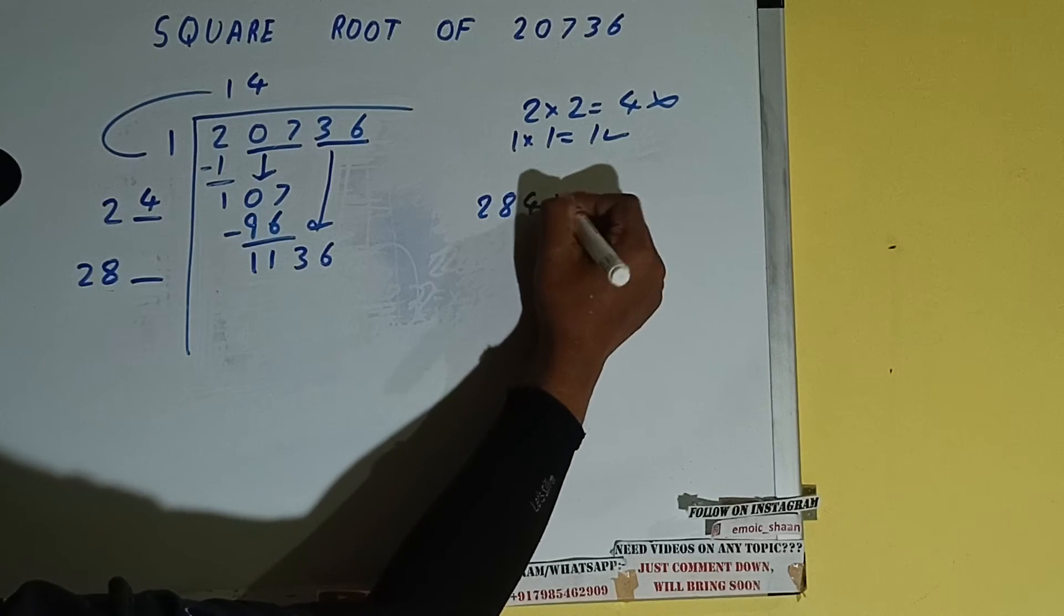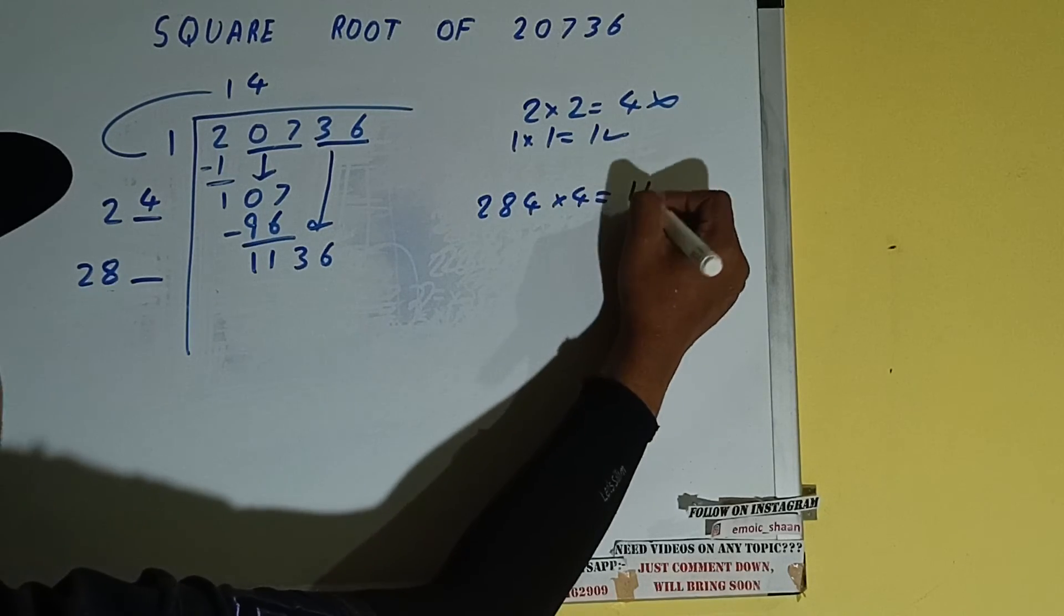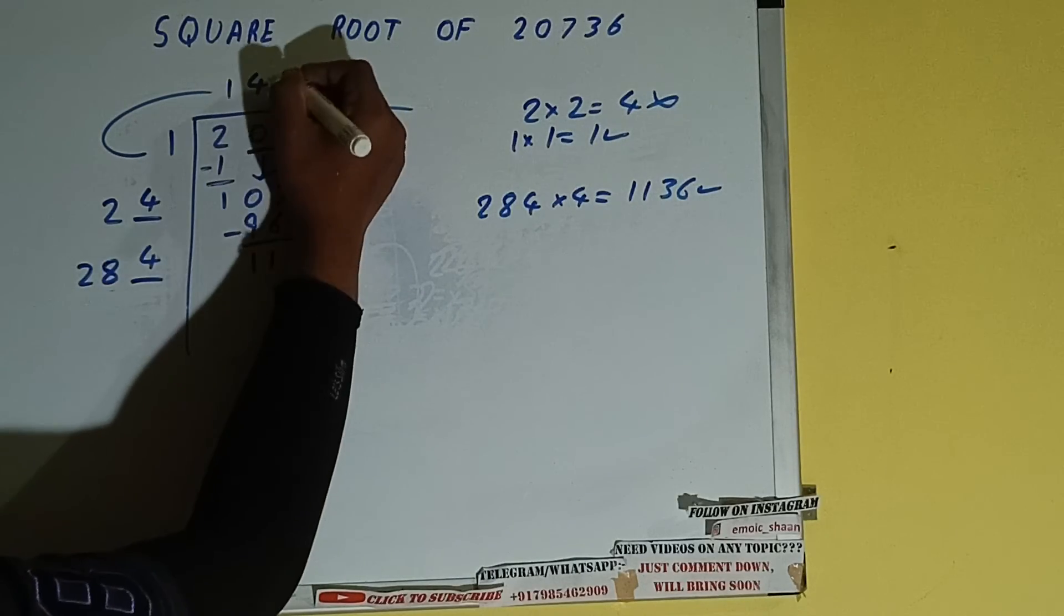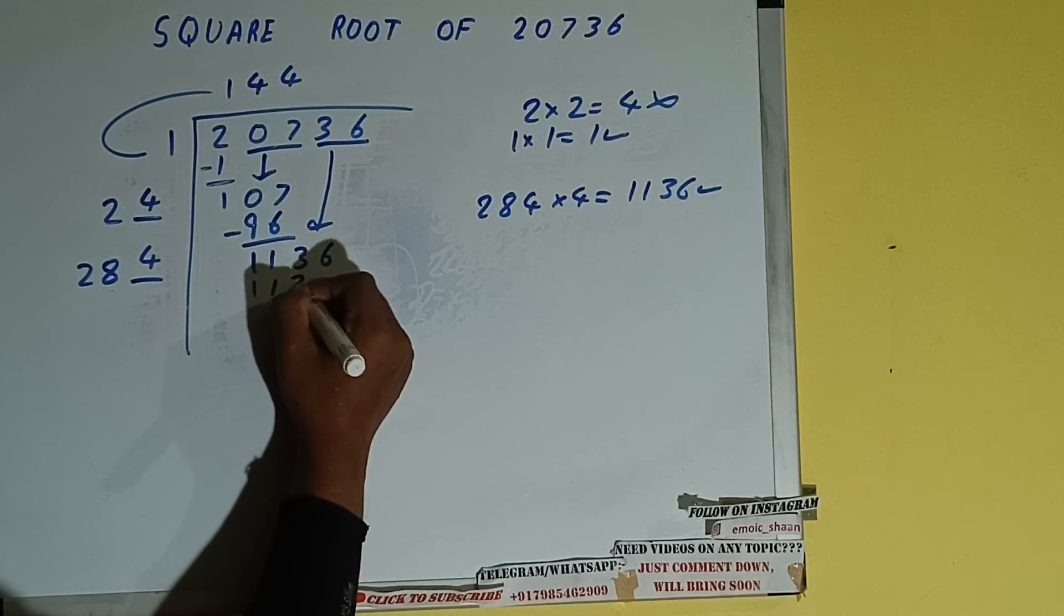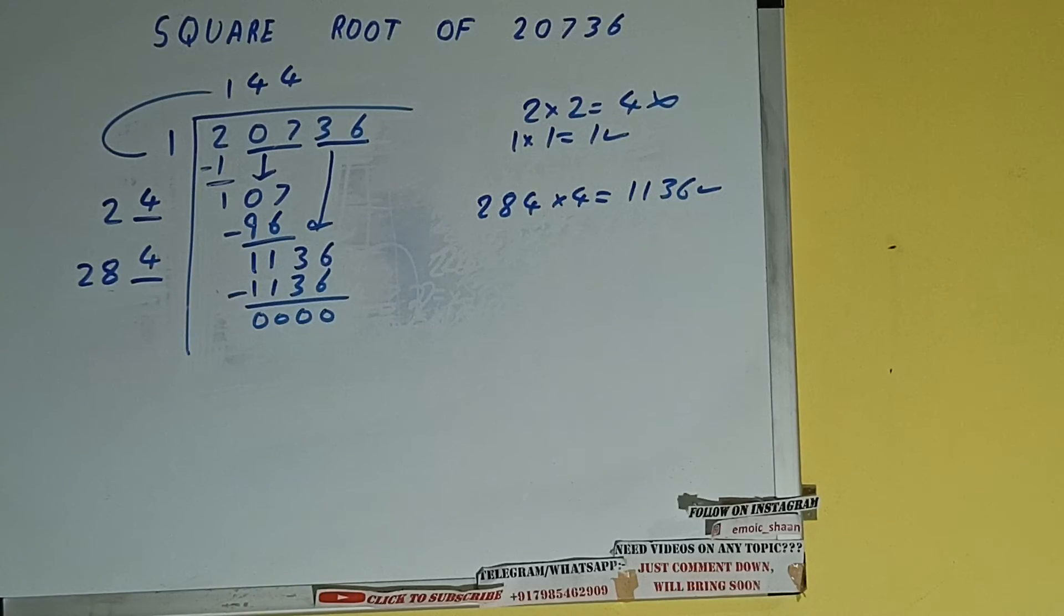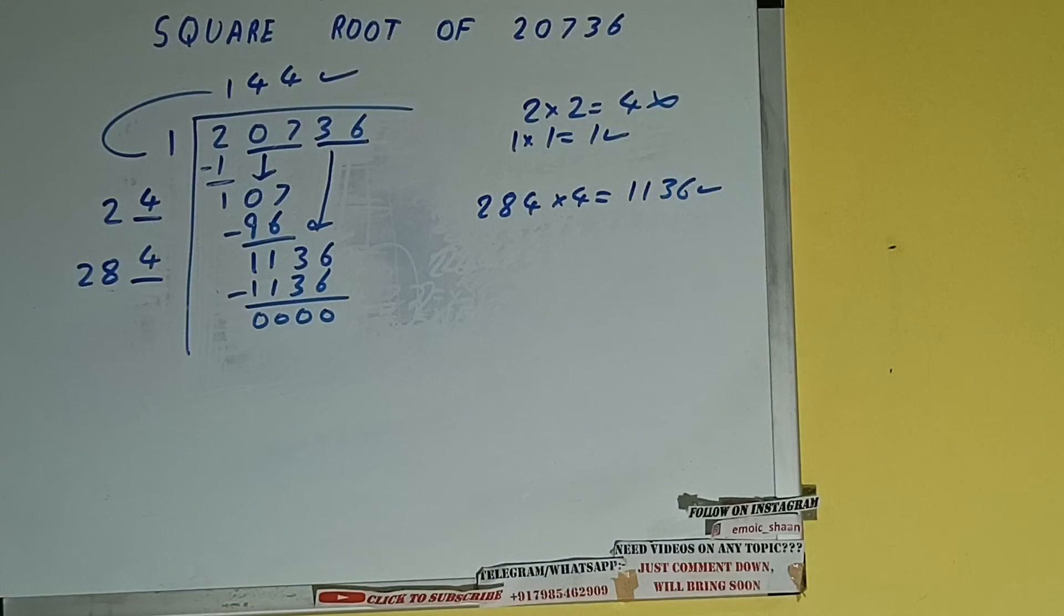284 into 4 we can try, and it will be 1136, which is good to take. So 4 here and 4 here, 1136 subtract 0 will be left. Once we get 0, whatever is in the question will be the answer. That is 144.